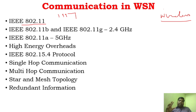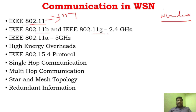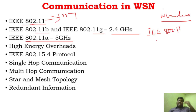Why are we studying about this in WSN? Because IEEE 802.11 is the formal standard for wireless communication, and we have different versions of it — that is, IEEE 802a, b, g, and so on. It covers various frequency ranges. IEEE 802.11b and g work at 2.4 gigahertz, and IEEE 802.11a works at 5 gigahertz. This is the predominantly used wireless standard, and it was used in early wireless sensor networks.